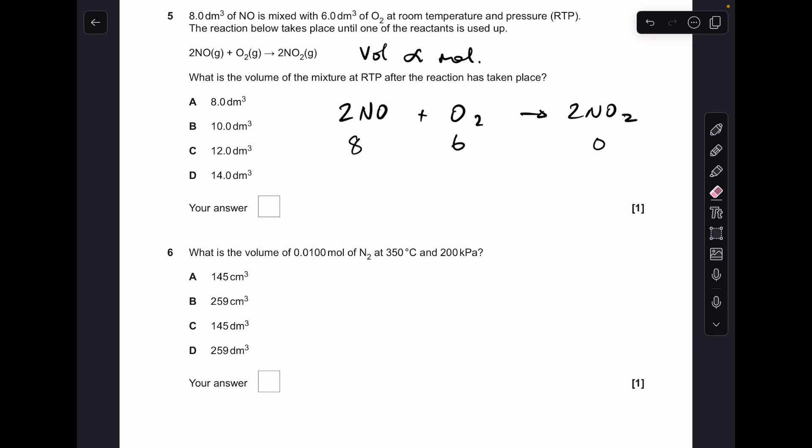So if we think about the NO first, you've got eight decimetres cubed of that. That's going to need half as many dm cubed of O2, so it's going to need four. Well there's six, so there's definitely enough O2 there, so the NO will all react, it's going to be the limiting reagent. So that automatically means that the O2 is the excess. We'll just prove that now. So for all of the O2 to react we're going to need twice as many decimetres cubed of NO, we're going to need 12. We've only got eight, so the O2 won't all react therefore it's in excess.